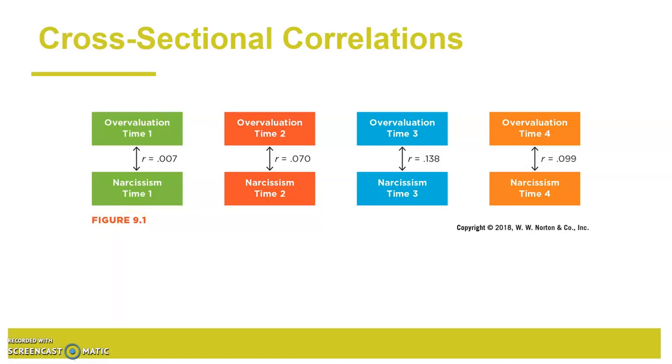These are correlations between just within one time point between those two measures. These are cross-sectional. Cross-sectional design or cross-sectional study, that is just measuring one time point, just taking a cross-section of our relationship at one time point.